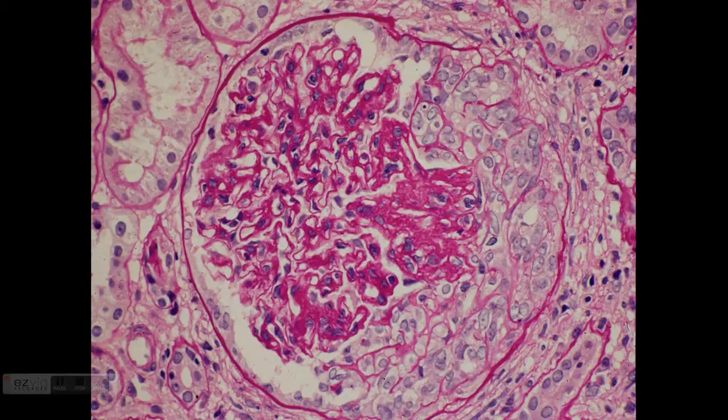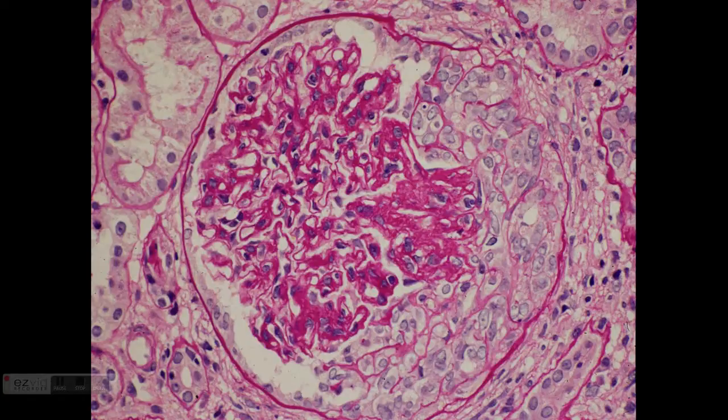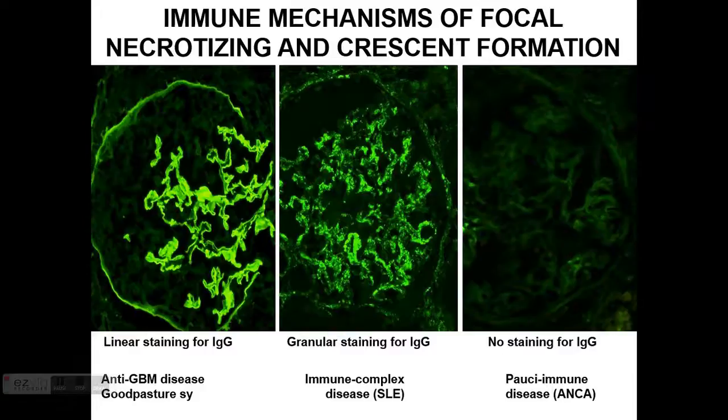Anti-GBM usually presents with crescentic GN, and I showed you here how that happens. But not all crescentic GNs are due to anti-GBM. As you can see here, you can see linear staining in crescentic GN, but you can have granular staining, for example in immune complex diseases such as lupus, post-infectious and so on. But sometimes we see pauci-immune disease with no deposits, and that's usually related to ANCA glomerulonephritis.